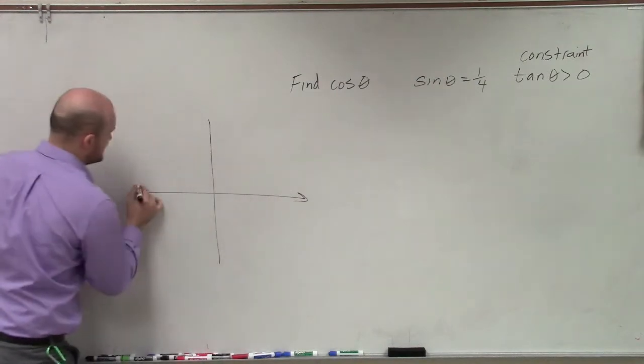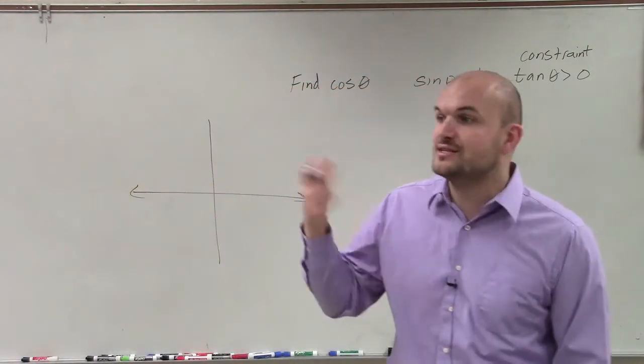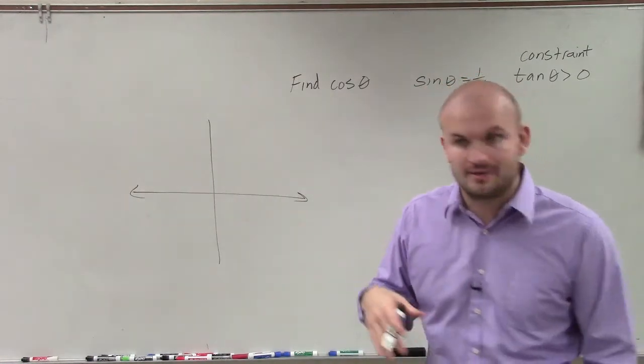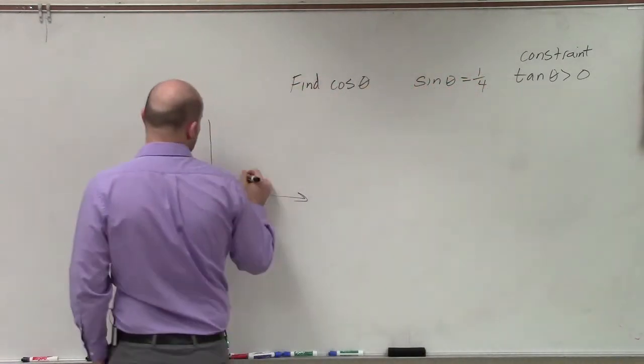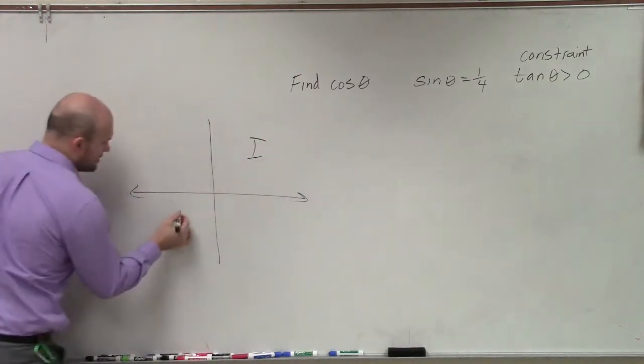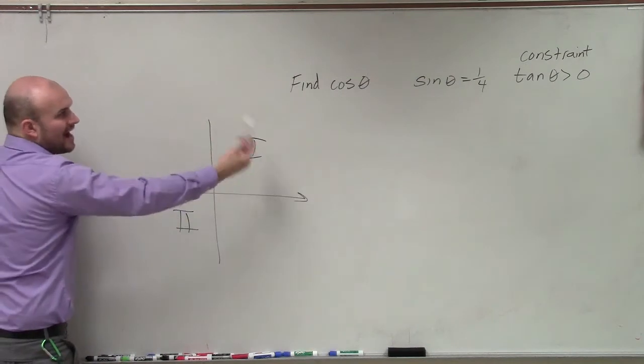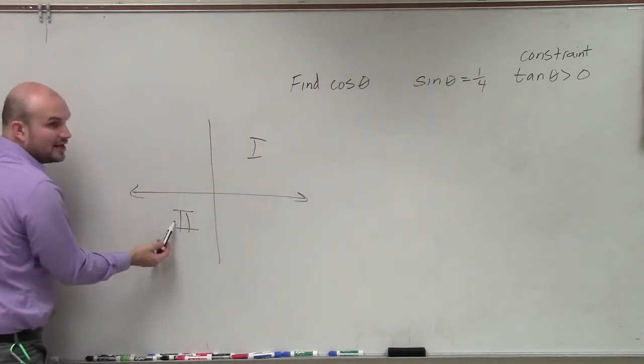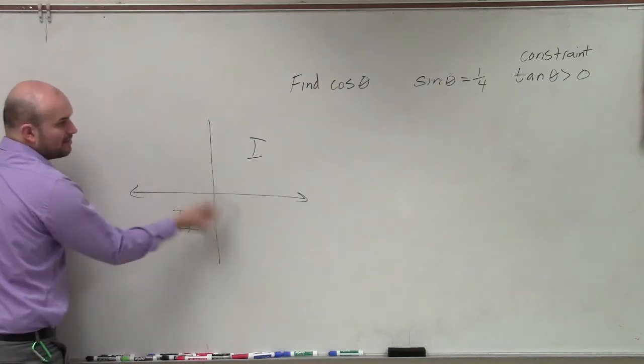First of all, let's look at where tangent is positive. Remember, tangent represents the y over the x-coordinate when we're looking at a point on the unit circle. Tangent is going to be positive in the first quadrant and the third quadrant. Because here, if y and x are positive, obviously tangent is positive. Here, if they're both negative, that makes them positive.